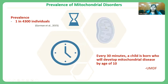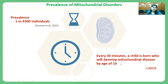If we look at the overall prevalence of mitochondrial disorders, there are 1 in 4,300 individuals, based on a study from the north east of England by Gorman et al. in 2015. As per UMDF, every 30 minutes a child is born with a mitochondrial disease, or a child who will develop a mitochondrial disease by the age of 10 — so the situation is quite difficult to handle.